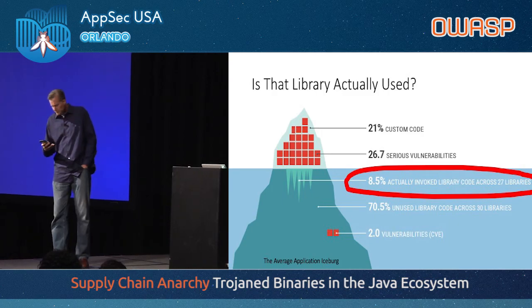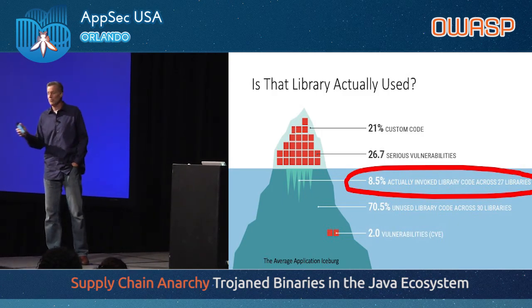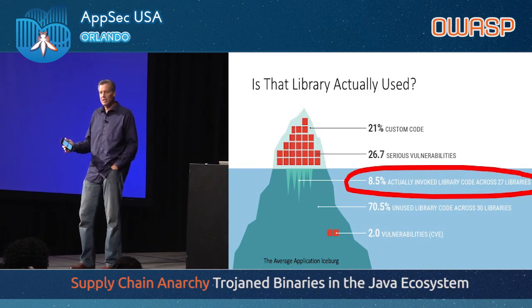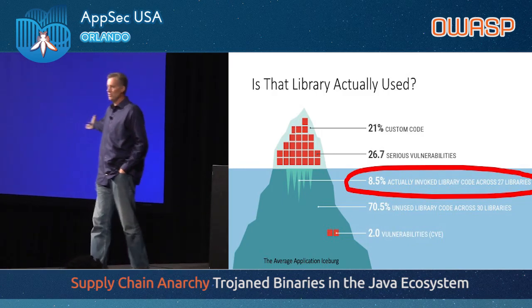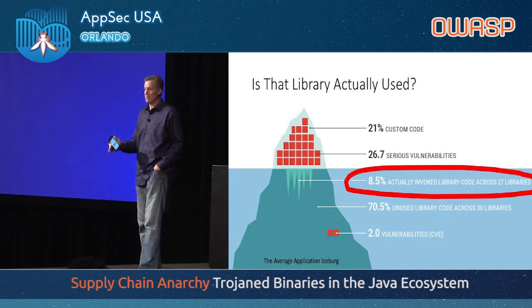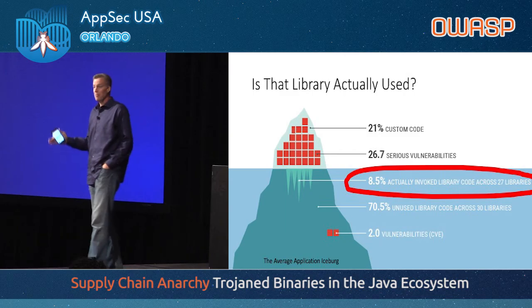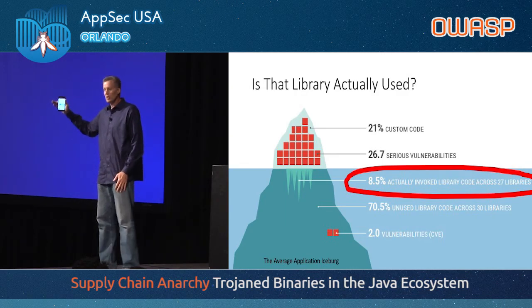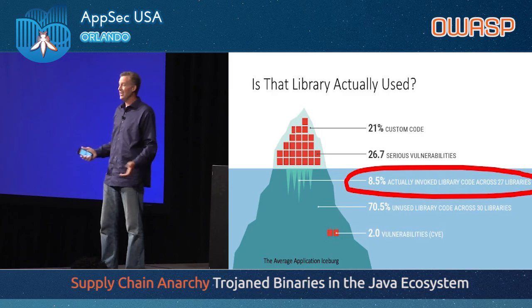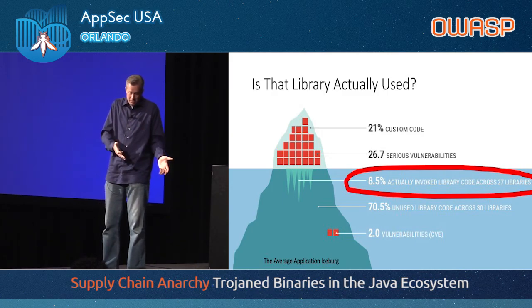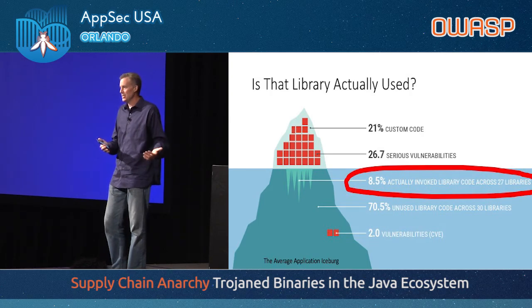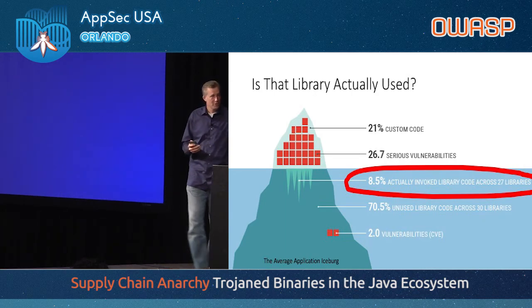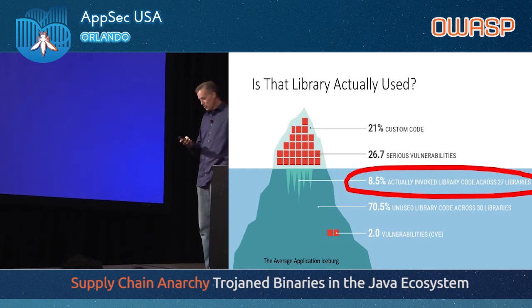You want to focus on the important parts of your application. When you look at where vulnerabilities fall, almost all of them fall in the custom code — an average of 26.7 vulnerabilities in custom code and only one or two on average in libraries. I'm not saying libraries are insignificant, but really focus on your custom code. That's where the most critical vulnerabilities are, and by contrast the library problem is relatively simple to solve.